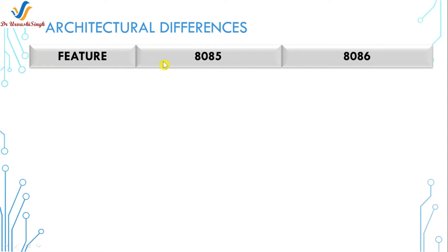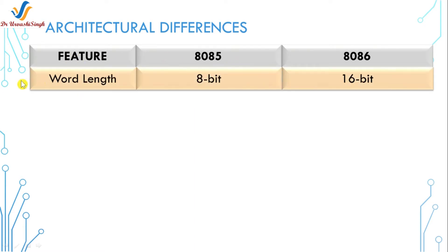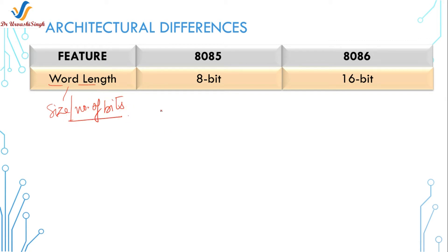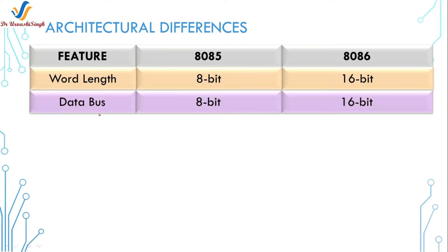First are the architectural differences. The first feature is the word length. Word length means the size or the number of bits that a microprocessor can process at a time. In the 8085 microprocessor it is 8-bit data, and in the 8086 it is twice that — 16-bit data that the microprocessor can process at a time. So you can see there is a big difference, and the next feature is the data bus.